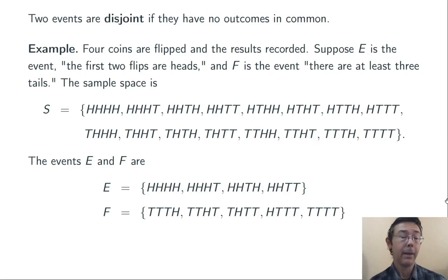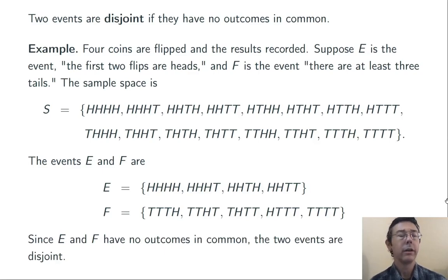Notice that there's no overlap between these two sets. There's no outcome that lies in both of the sets. These are disjoint. To say it in words, it's impossible for both of these events to happen at the same time in one trial of this probability experiment.